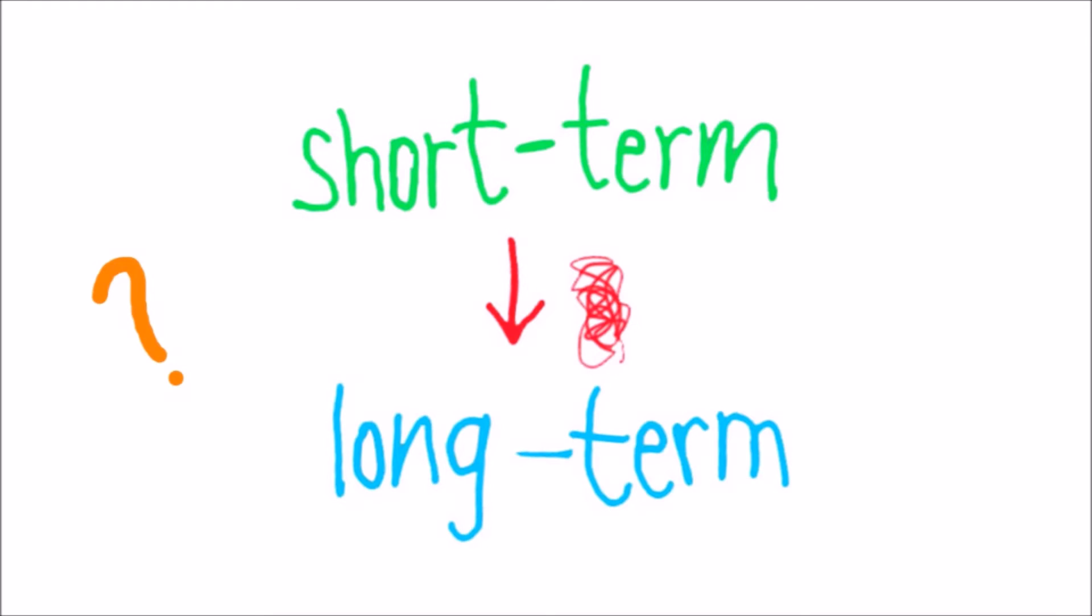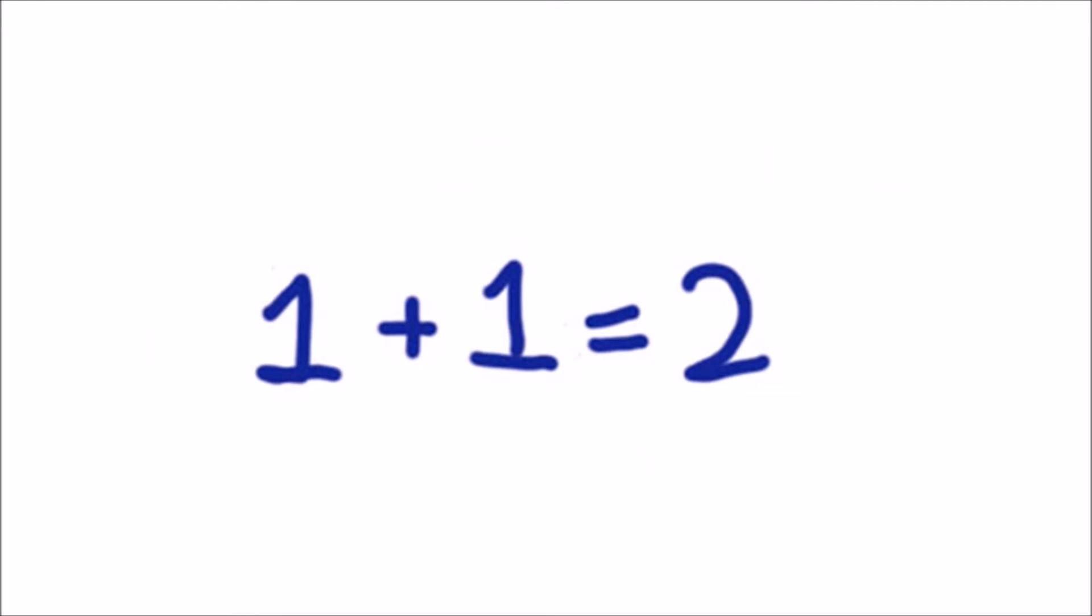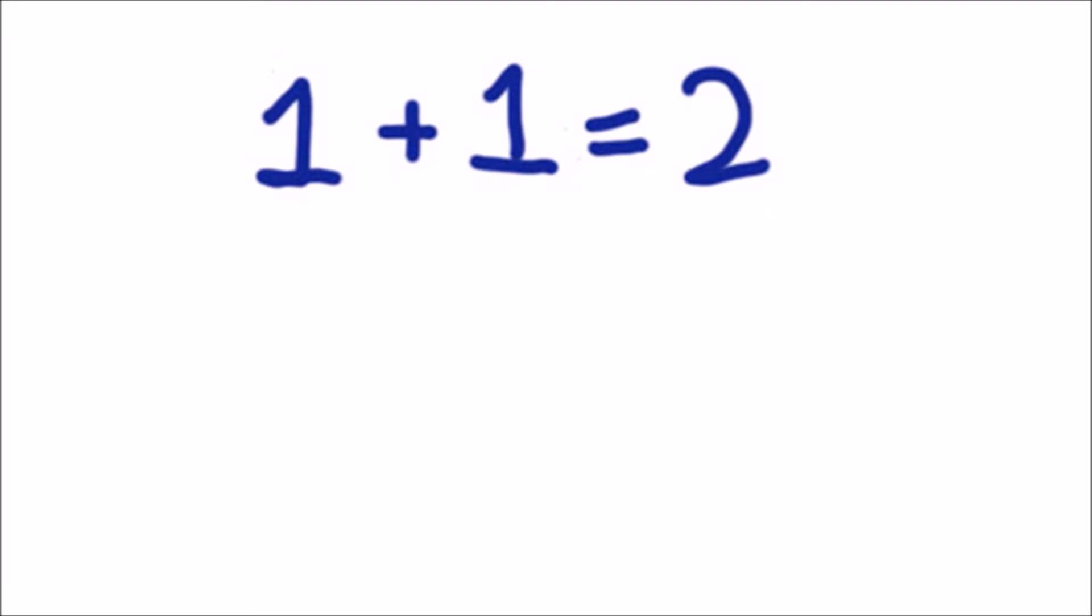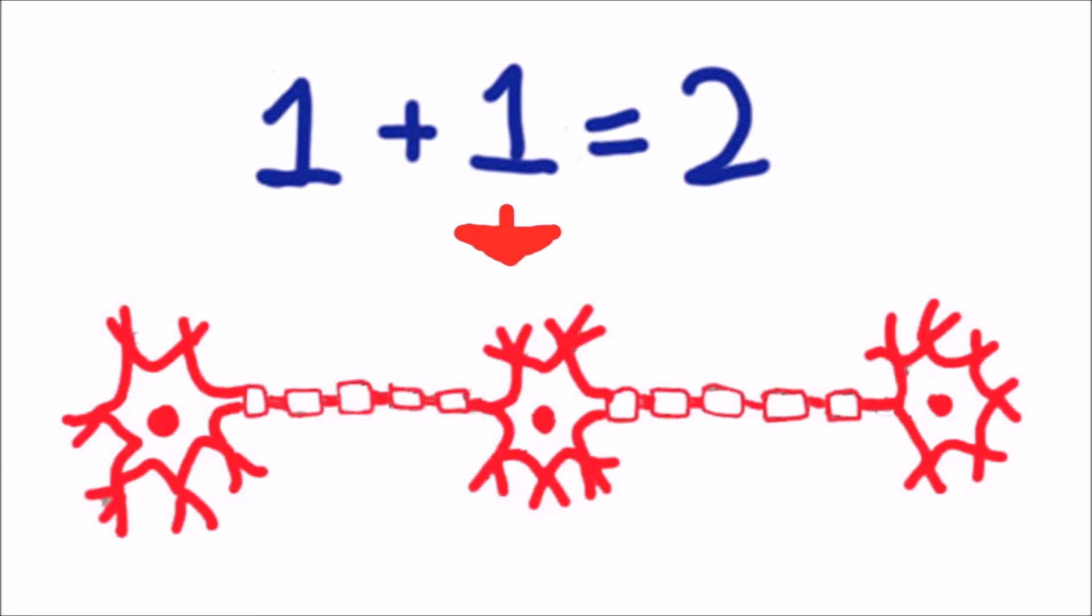However, we still do not know how or under what situations encoding works. A specific example of memory formation would be, first, you see 1 plus 1 equals 2. This is the stimulation that your brain receives. This sends an electrical signal that fires through a series of neurons.